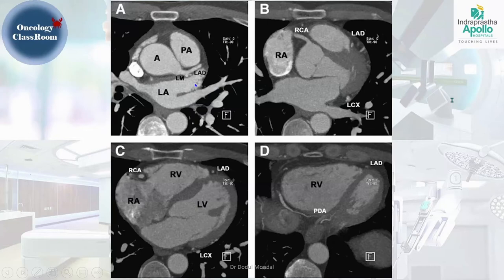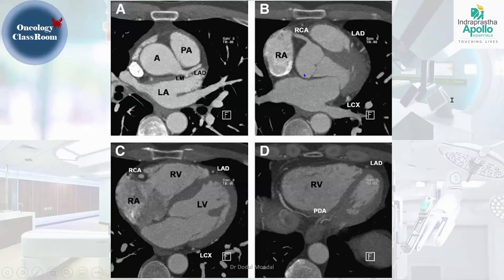When looking at a single cross-section, it can be difficult to determine whether a pulmonary vein is superior or inferior, so scrolling up and down is necessary. We can see the ascending aorta, the sinus, and the left main coronary artery originating, dividing into the left anterior descending and left circumflex artery. We can see the four chambers: right ventricle, interventricular septum, left ventricle, left atrium, and right atrium. The right coronary artery arises from the right side of the ascending aorta, runs between the right ventricle and right atrium, wraps around posteriorly, and continues as the posterior descending artery.